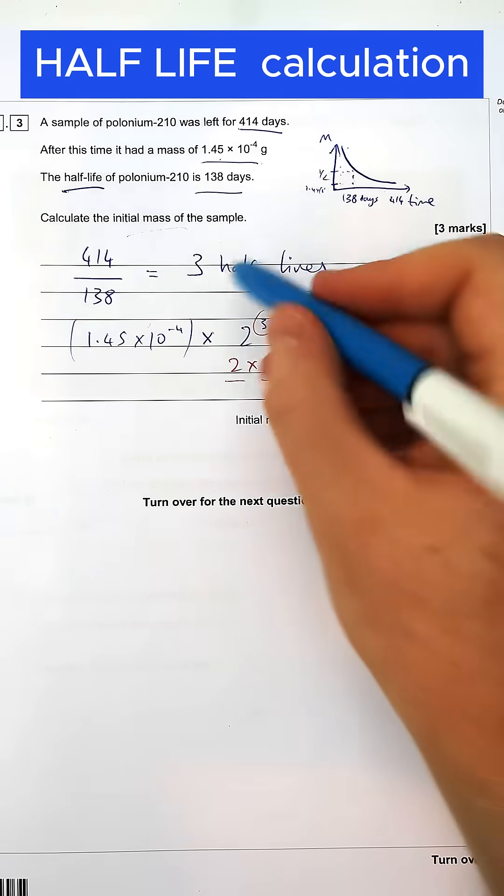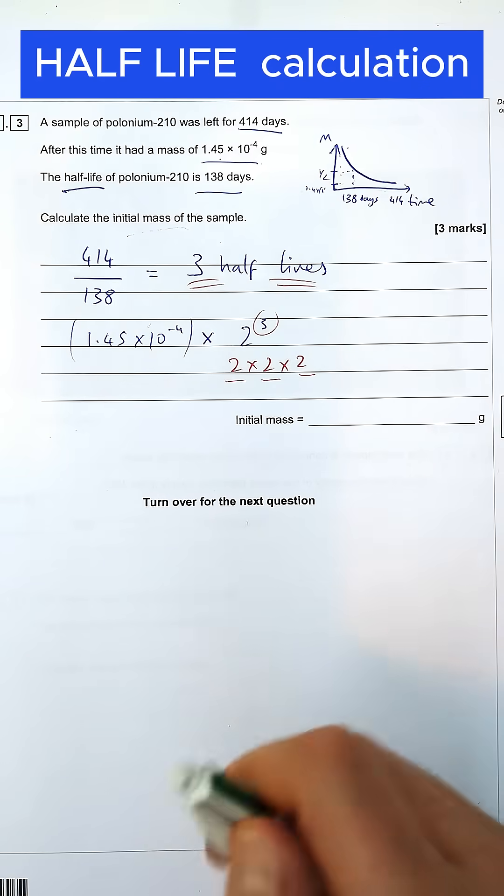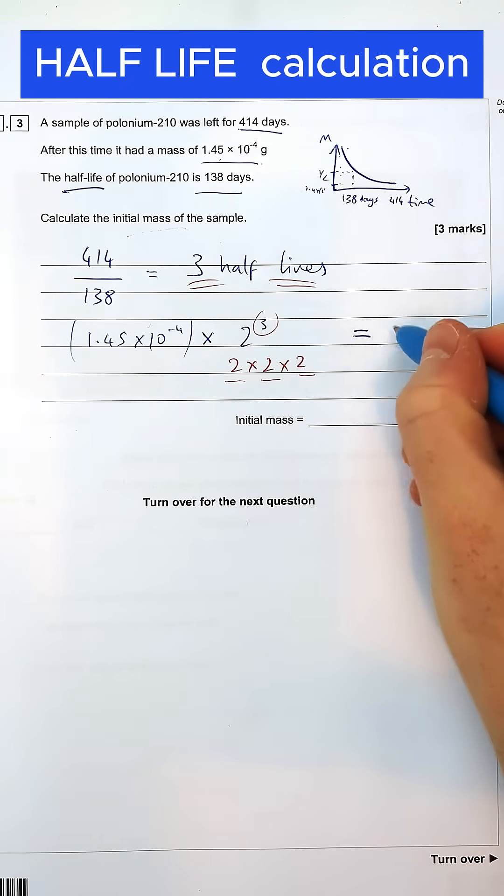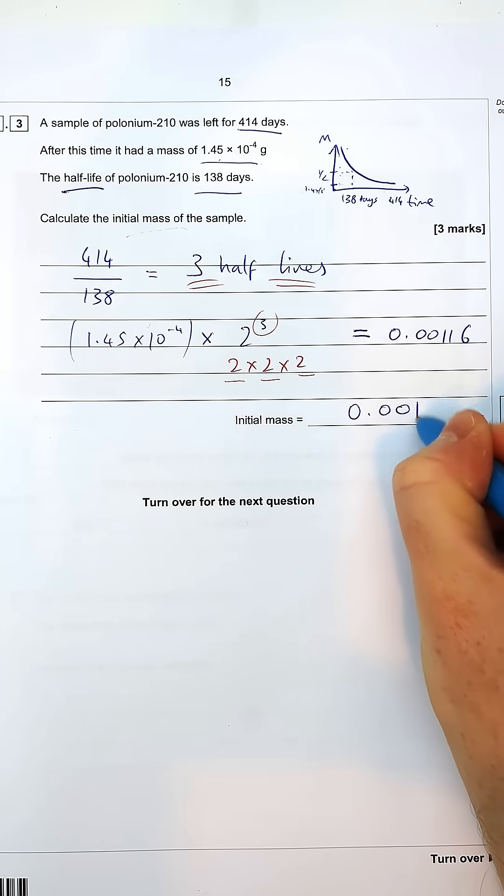So you double it, double it, double it. It's working backwards from three half-lives. If you do that, you'll end up with a final answer of 0.00116, which is our final answer to this question.